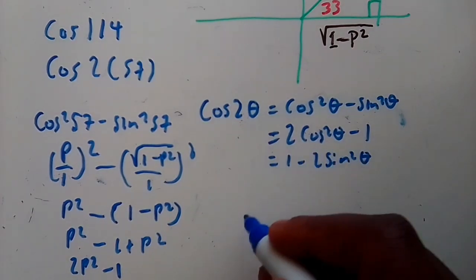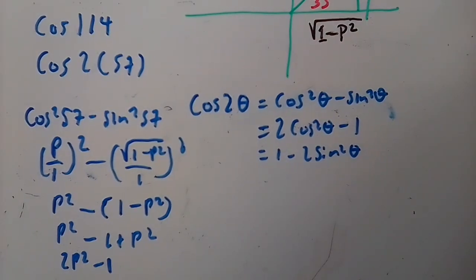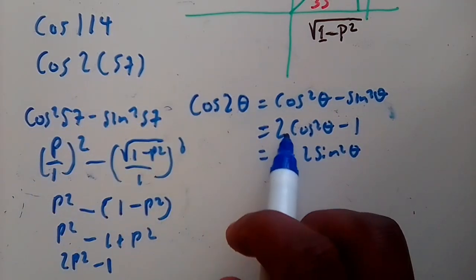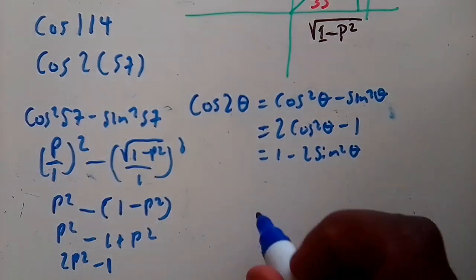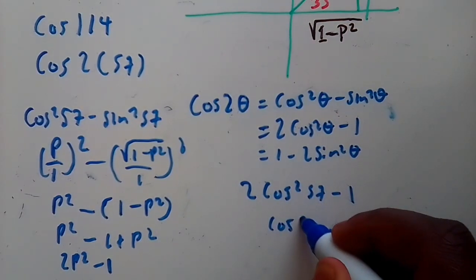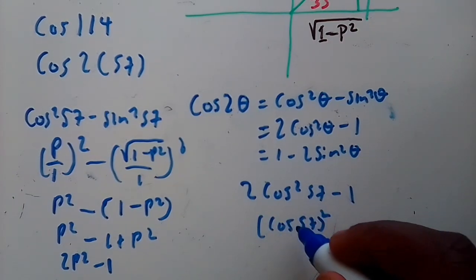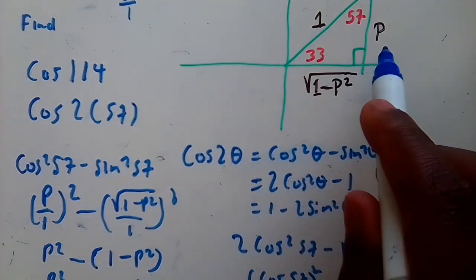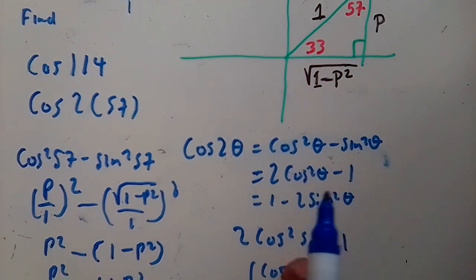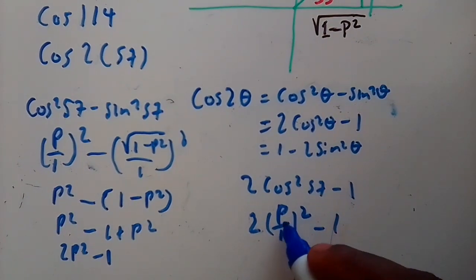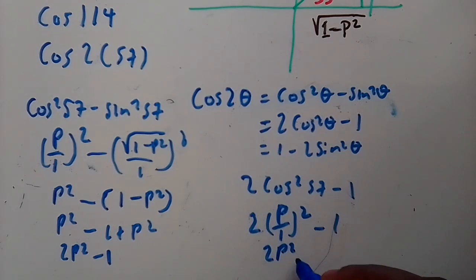To verify: using the second identity, cos 2(57°) = 2cos²57° - 1 = 2(p/1)² - 1 = 2p² - 1. The same answer — confirming you can use any of the three identities when no indication is given.